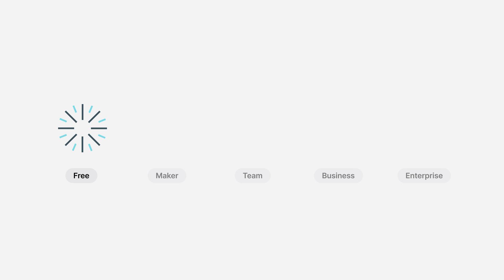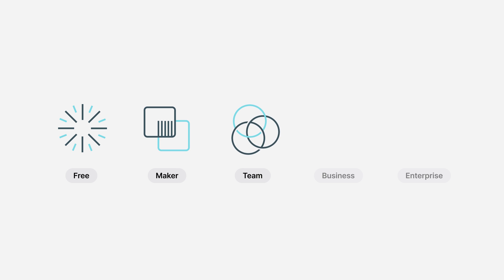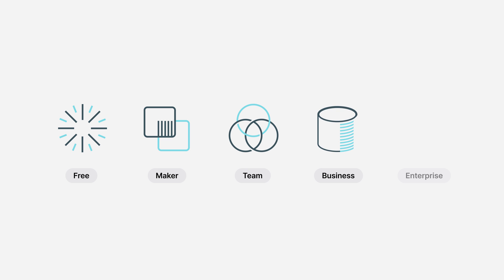So in summary, Glide now has five plans: a free plan for you to explore Glide's core features, a maker plan to prototype your business idea or run an app for your community, a team plan to turn spreadsheets like Excel and Airtable into tools for your team, a business plan for companies to build powerful software on top of databases, and an enterprise plan to deploy and scale custom tools across your entire organization.